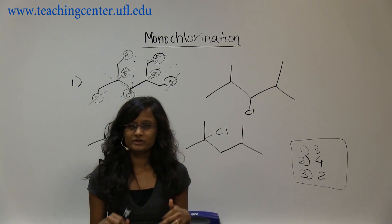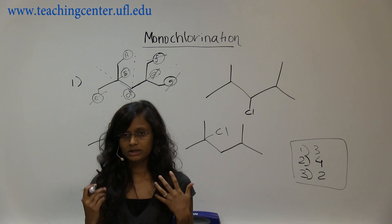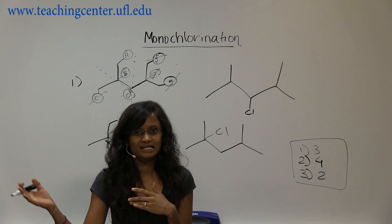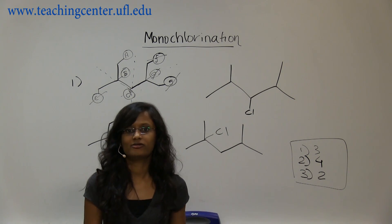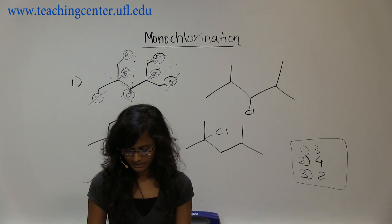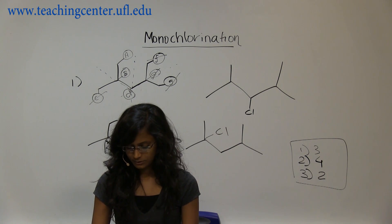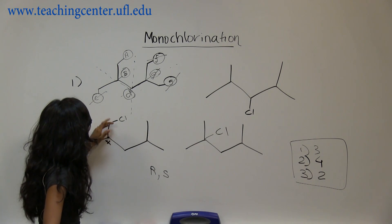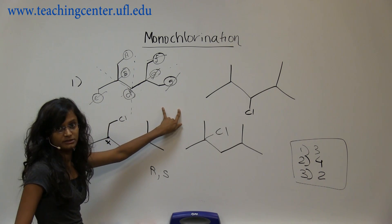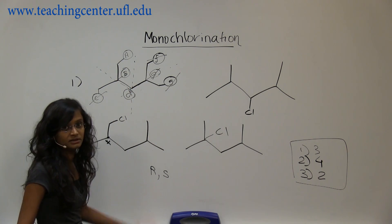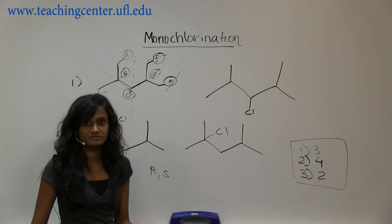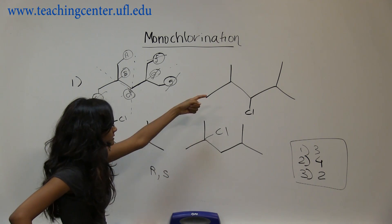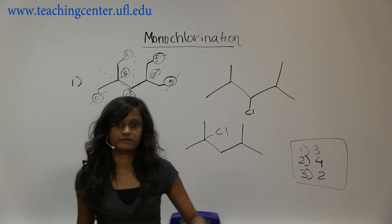If you realize, the only hard part is getting to the first question. After that, it's just follow-up questions you've already learned. So to repeat the process: first, label all the hydrogens. Second, cross off similar hydrogens by looking at the symmetry. Third, draw the products. Then do the rest of the questions.